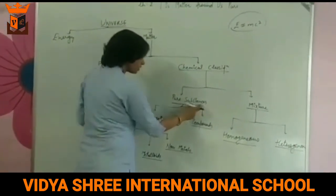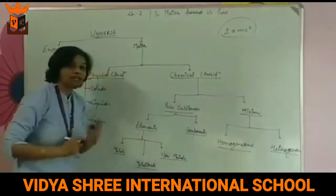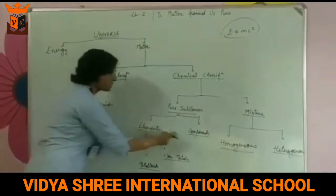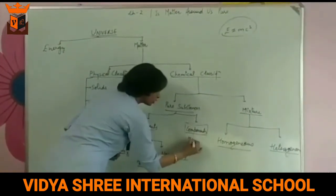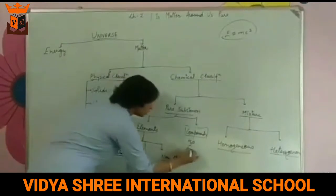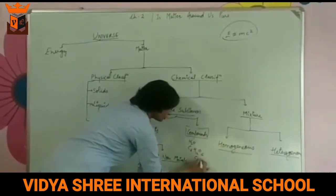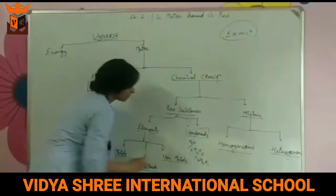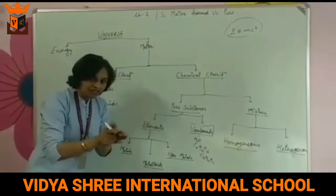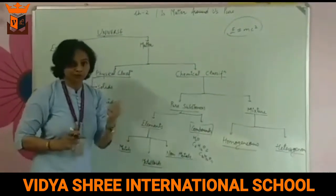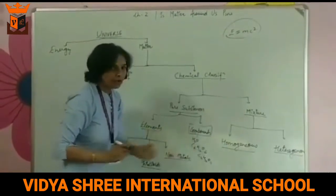According to chemical classification, substances can be of two types: either pure substances or mixtures. Pure substances can be categorized into two: elements and compounds. Compounds are substances like water, sugar (C₁₂H₂₂O₁₁), and glucose (C₆H₁₂O₆), in which elements are combined with each other in a fixed proportion. We will also cover some laws according to which these are organized.